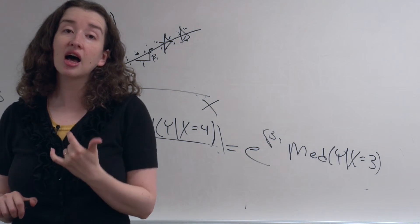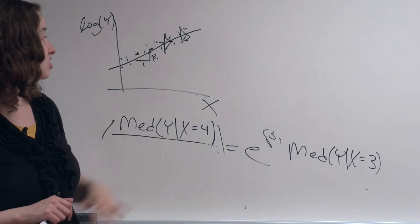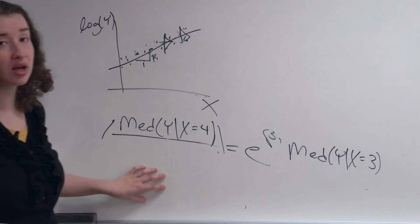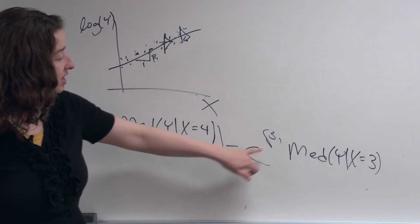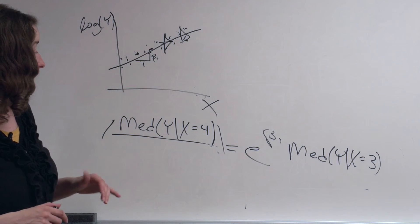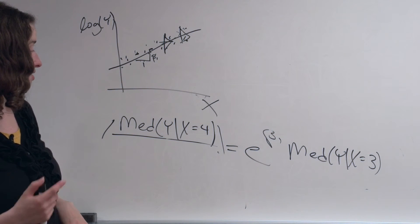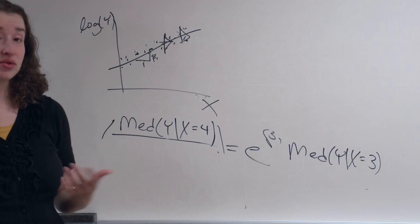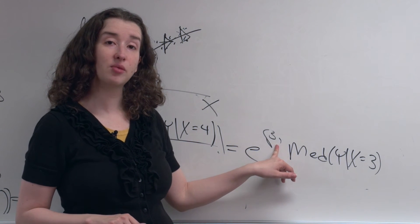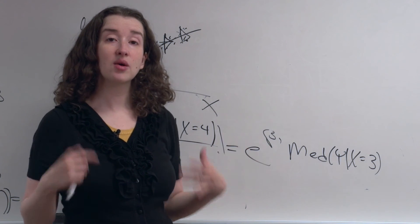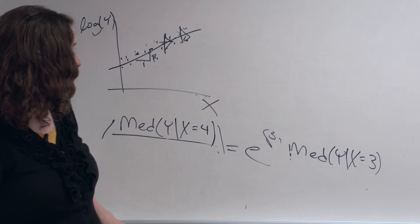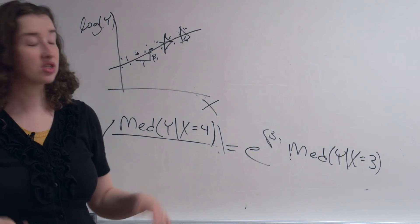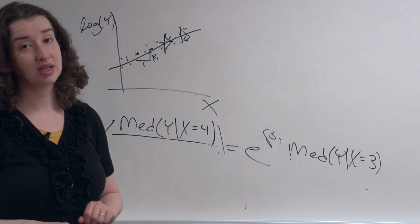So even if you had to take the log of your outcome in order to run a simple linear regression — in order to have your linearity assumption and your homoscedasticity assumption be true — we can still talk about the results on the original scale by exponentiating: taking e to the power of our slope estimate, and talking about how much the median of y given x changes when x goes up by 1, as opposed to how much the mean of y given x changes. Just like in the context of the t-test, we can also use intervals here. You have lower and upper bounds for your slope estimate from your regression output. If you take e to the lower bound and e to the upper bound, now you have a confidence interval for this number, and you can say the value we multiply the median by when x goes up by 1 has a 95% probability of lying in that range.